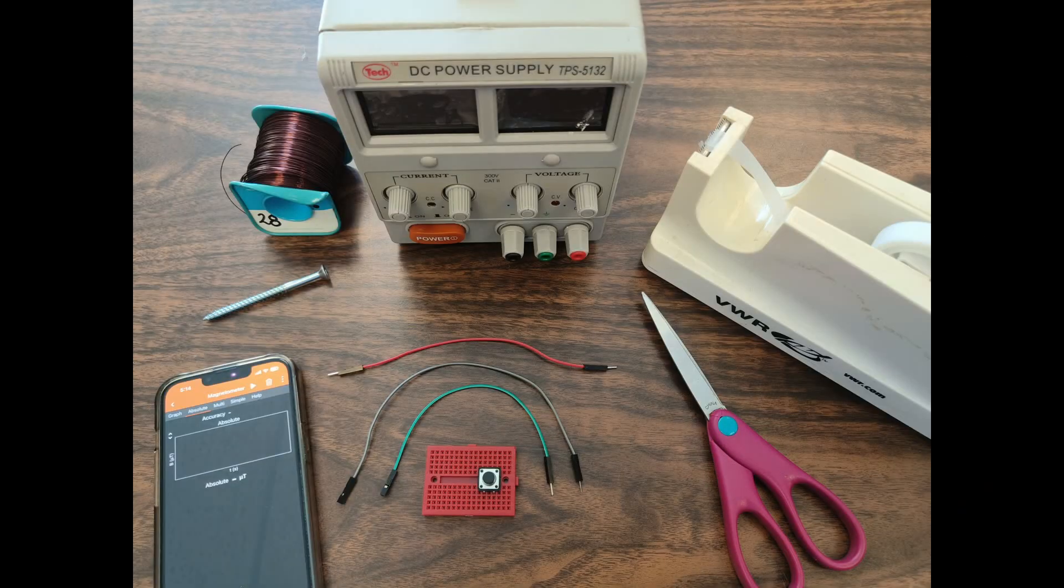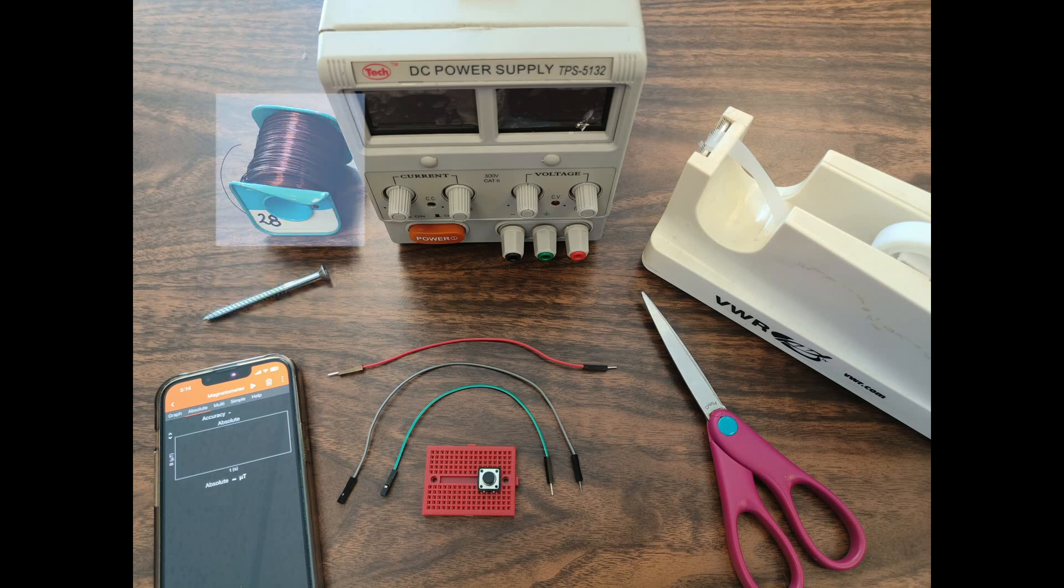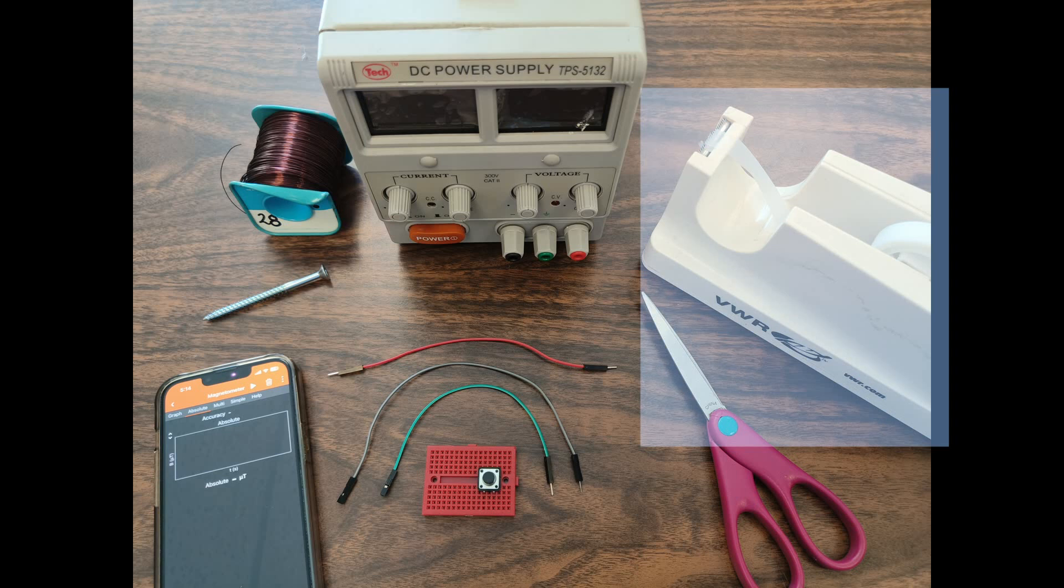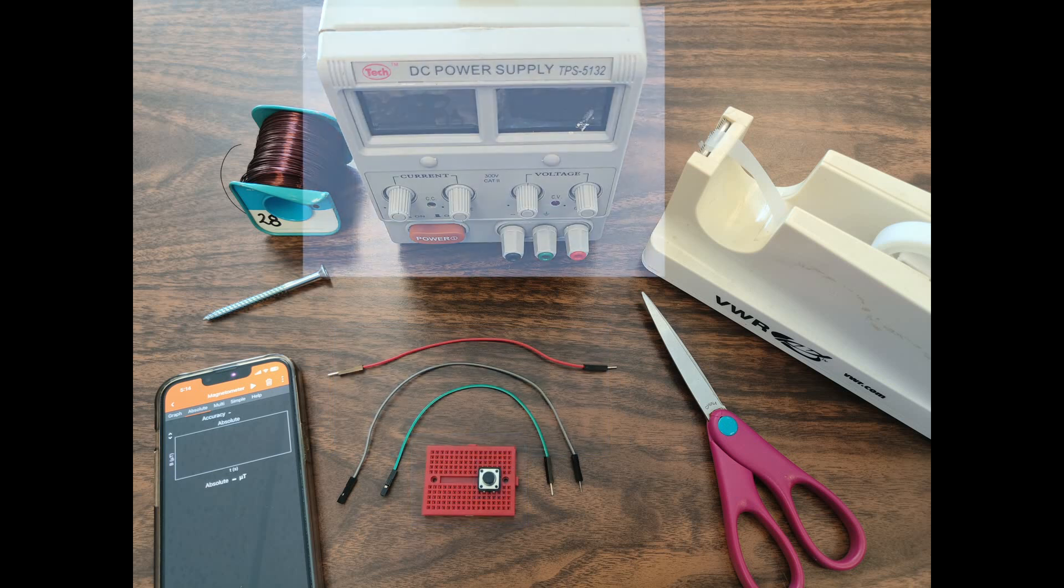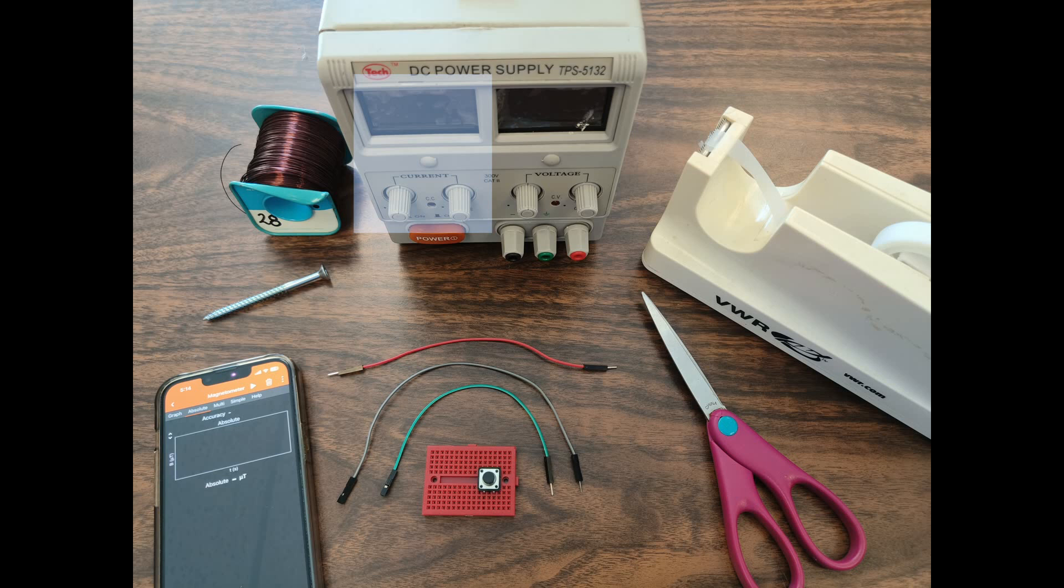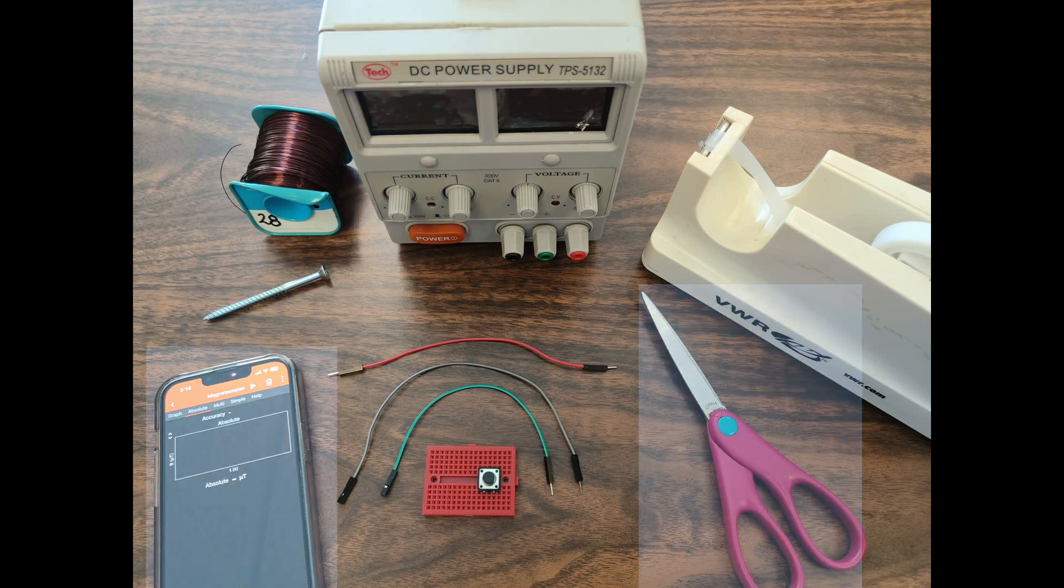Now that we understand what an electromagnet is and the linear correlation between current and field strength, let's try an experiment. For this experiment, you will need a nail, some wire, some tape, preferably electrical tape, some small connectors as shown in the image, a breadboard, a push button, a DC power supply with adjustable current, a pair of scissors, and a phone running FIFOX with a magnetometer available.